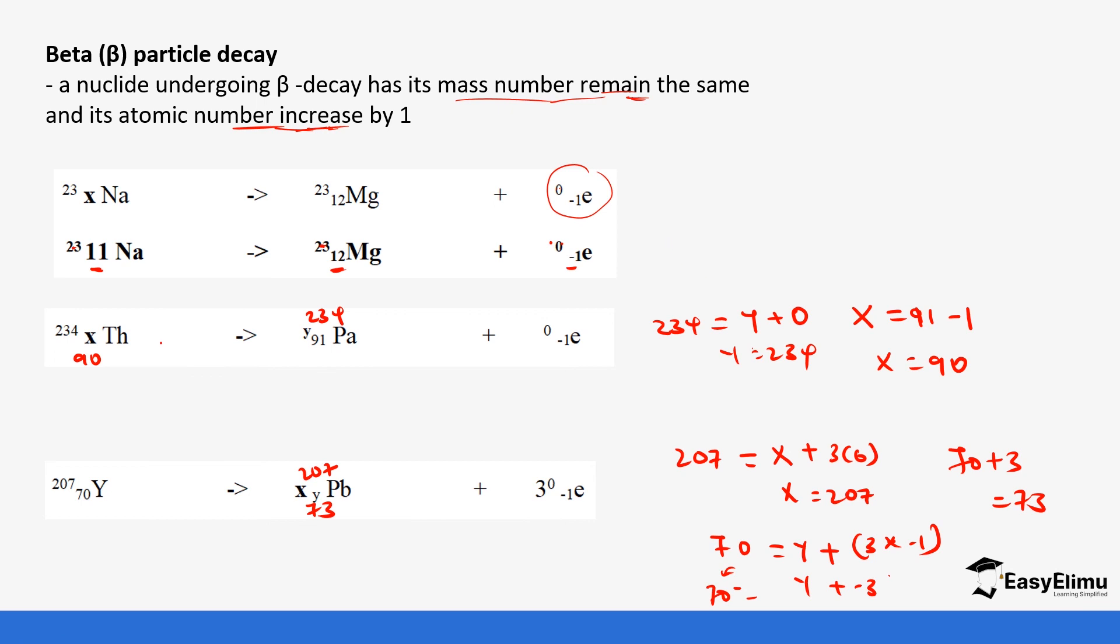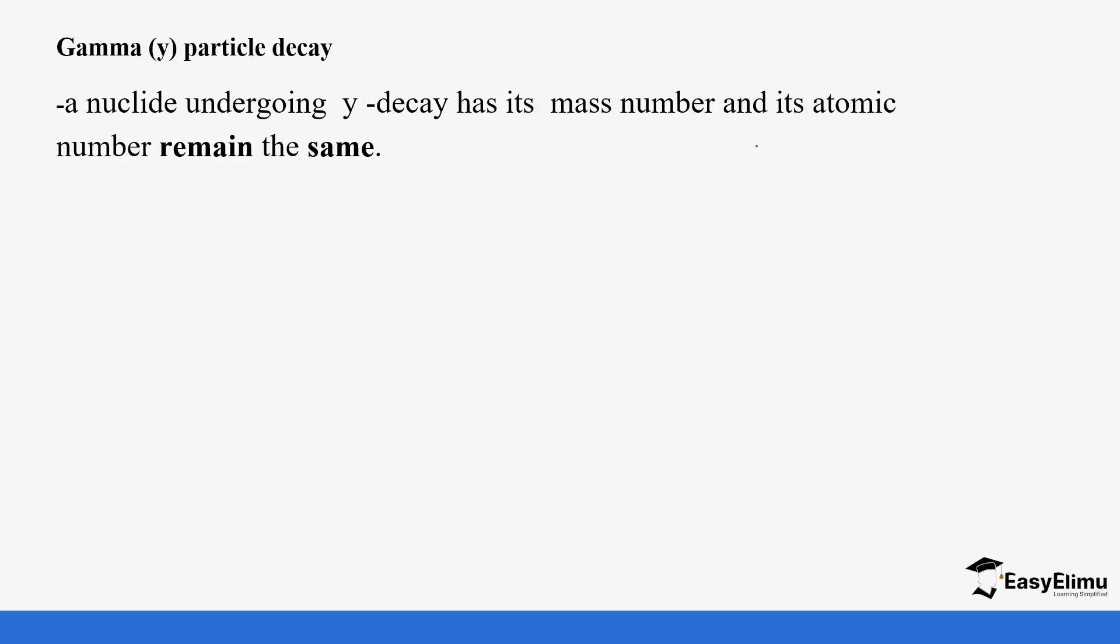Let's look at gamma rays. A nucleus undergoing gamma ray emission has its mass number and its atomic number remain the same. But for the gamma rays a lot of energy is also released in the process. For example, if you see the chlorine that we are starting with is the same product and then gamma rays. Also the carbon, you can see it's the same and gamma rays are emitted.